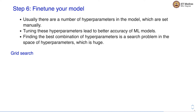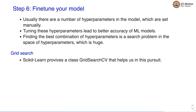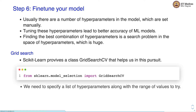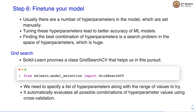Fortunately, we have a couple of ways in which we can perform this activity in the scikit-learn package. The first one is the grid search. We have a class GridSearchCV that helps us in finding the best combination of hyperparameters. We can import GridSearchCV from the model selection package. We need to specify a list of hyperparameters along with the range of values to try. Once we specify these values, GridSearchCV would automatically evaluate all possible combinations of hyperparameters using cross-validation.